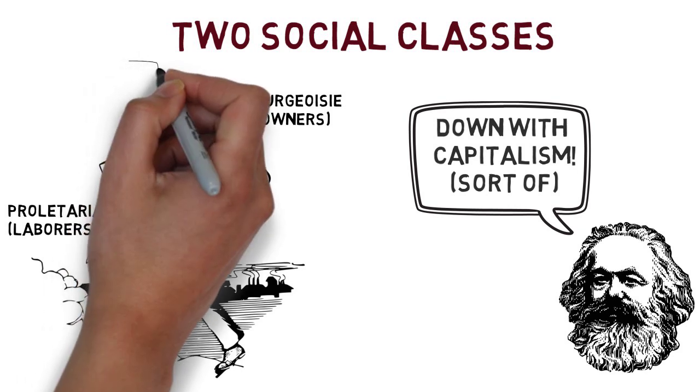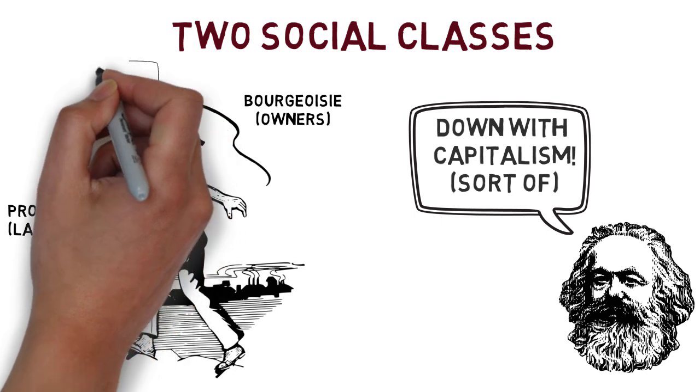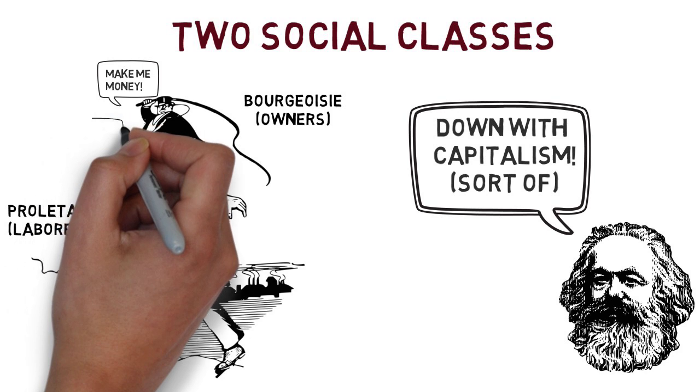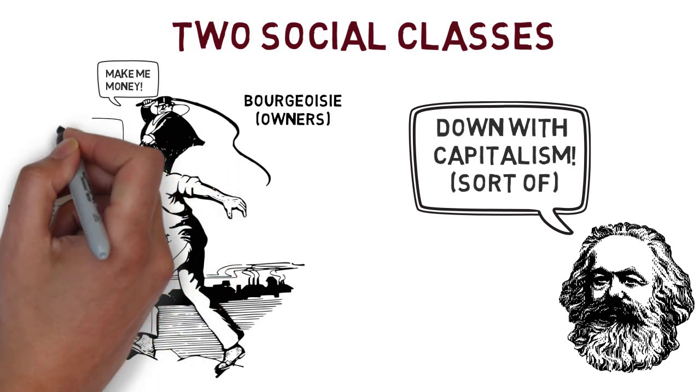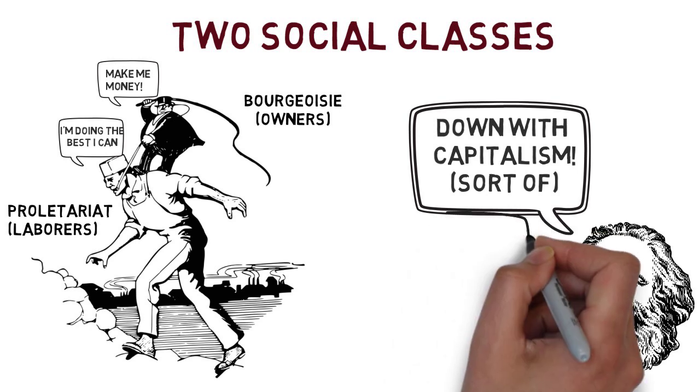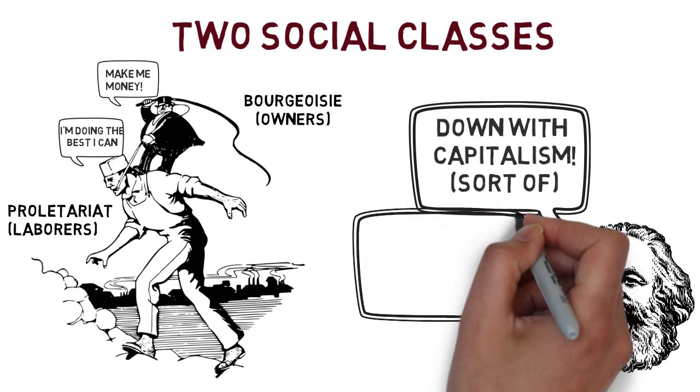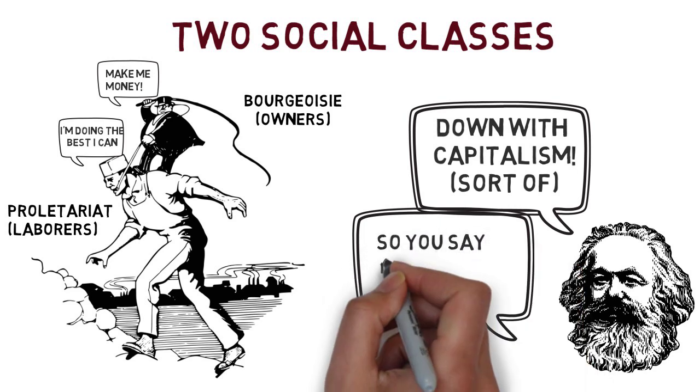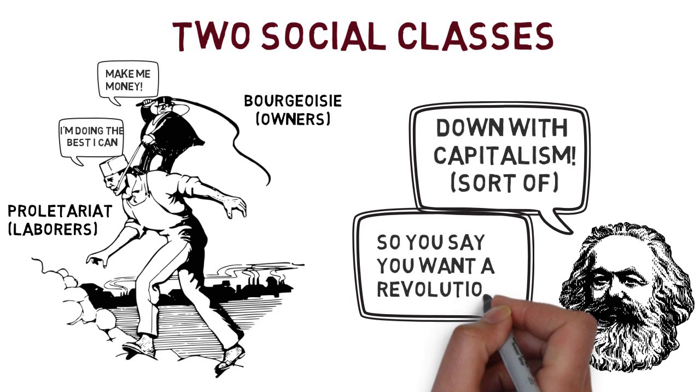These were the people that typically did not have the resources to invest in mass production. The only thing they could sell was their labor. Marx was a strong supporter of the proletariat. He believed that the proletariat gained little but lost much in a capitalist system, while the bourgeoisie benefited a great deal. He believed that the proletariat would eventually overthrow the bourgeoisie and a new economic system would be created.